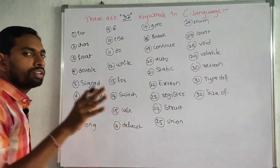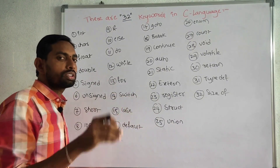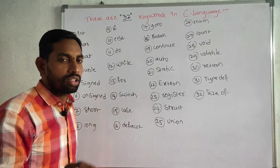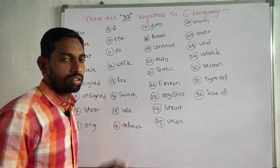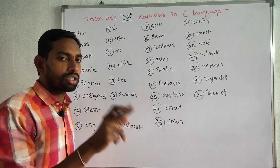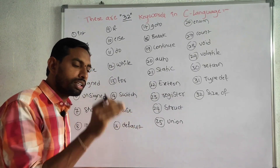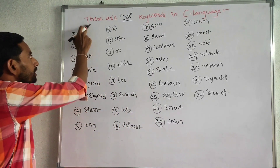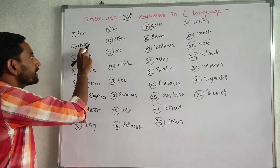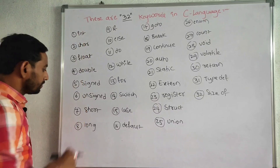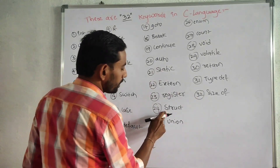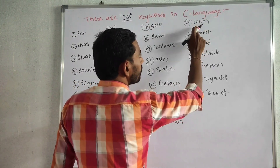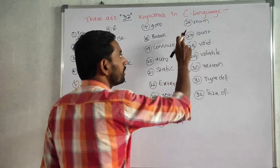These are the 32 keywords in C language. These keywords should be used as they are defined in C language; otherwise the compiler will give an error and the user cannot get a proper result. For example, we write 'int' but pronounce it as integer; we write 'char' but pronounce it as character; we write 'struct' but pronounce it as structure; we write 'enum' but pronounce it as enumeration.